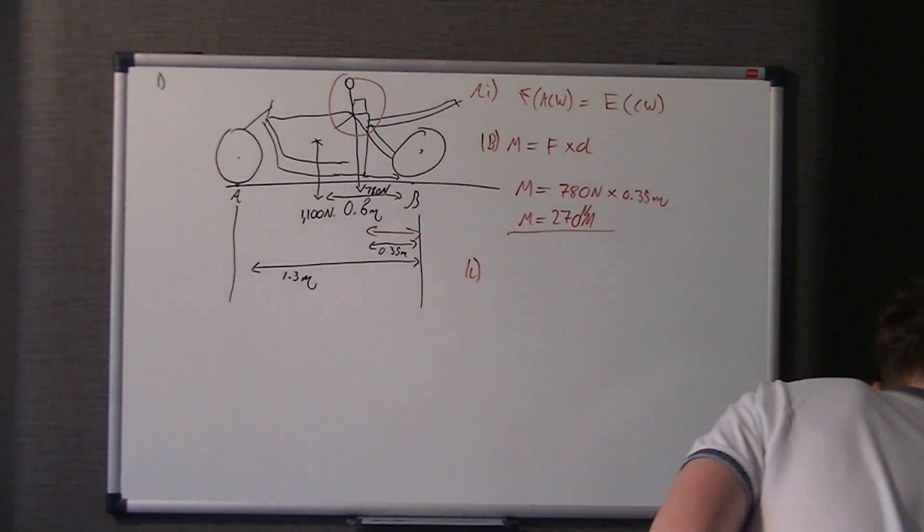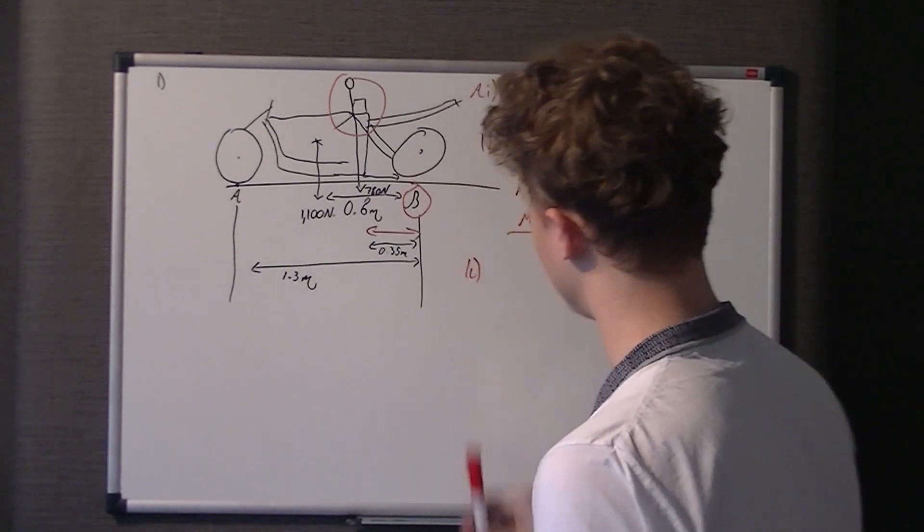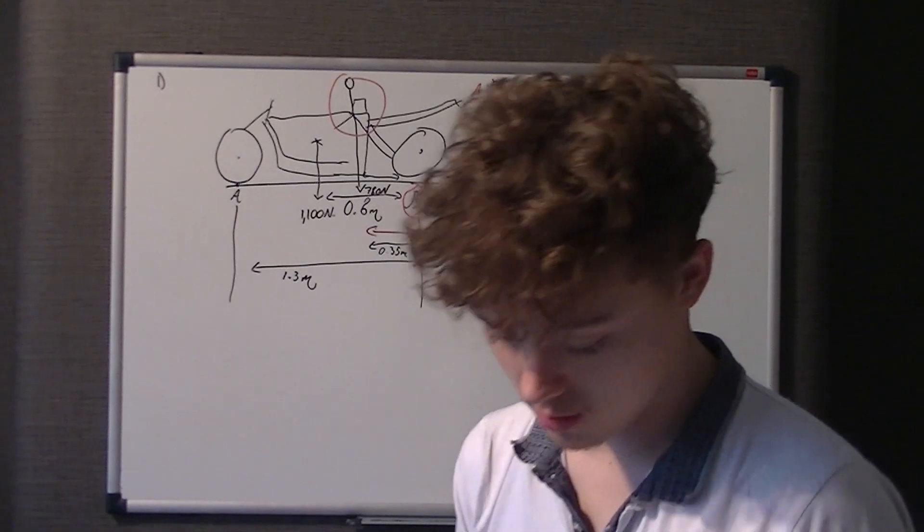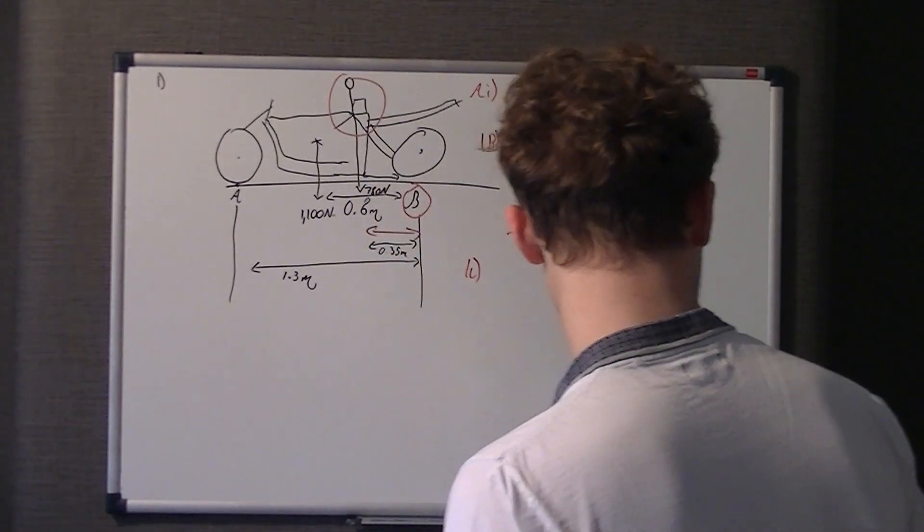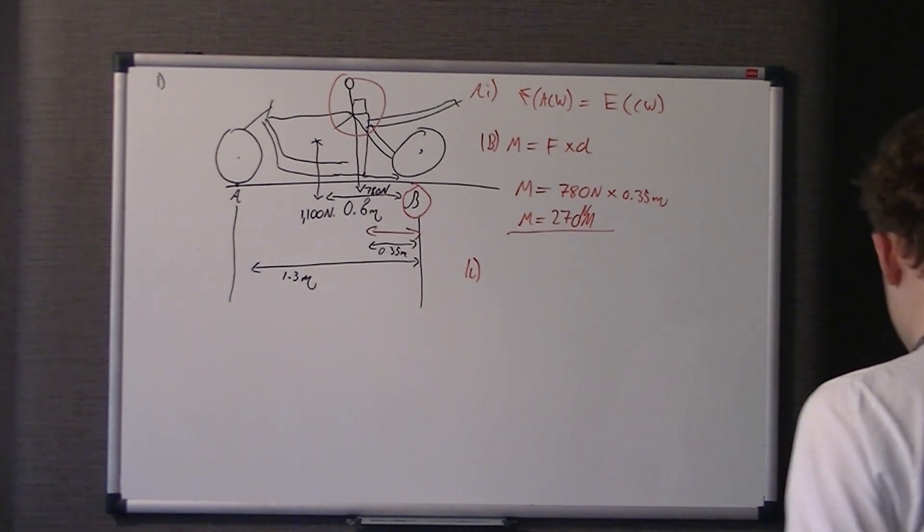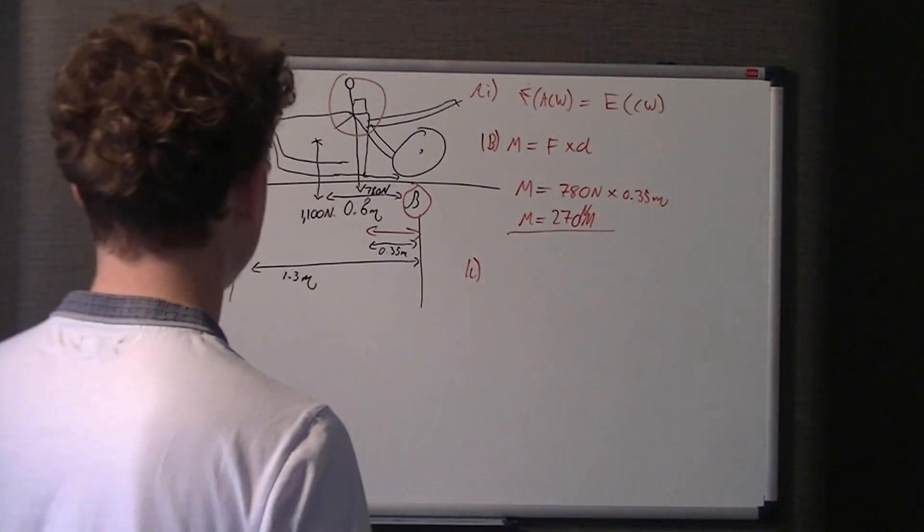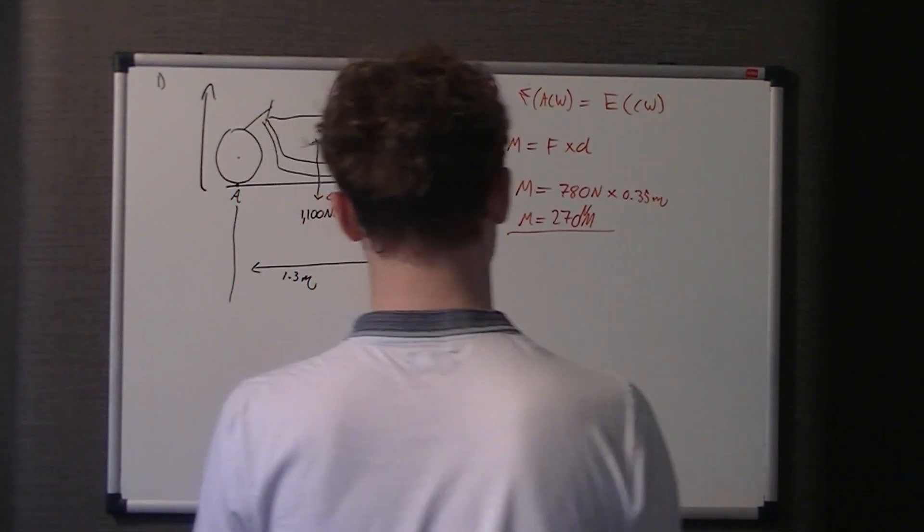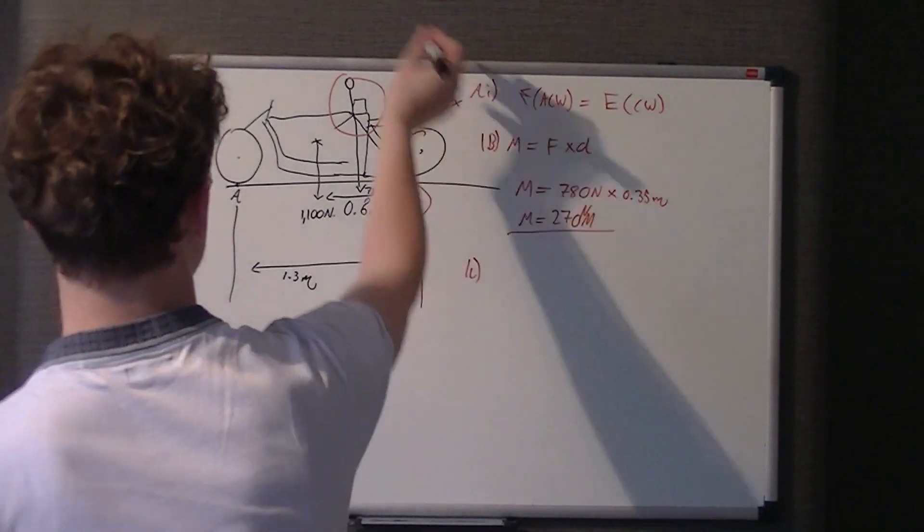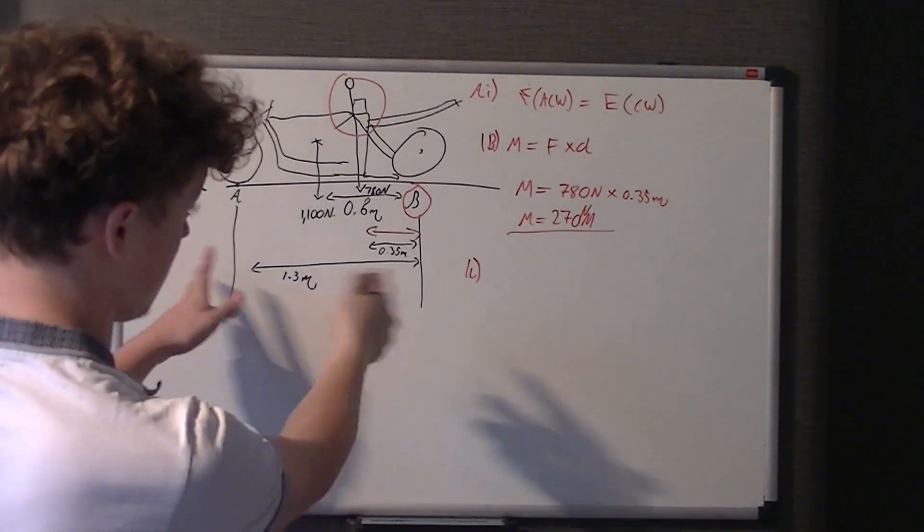On to 1C. So, by taking moments about B, which is this point. I'm doing some different colours. It's getting crazy now, guys. Doing black. So, we're at B. And it says calculate the vertical force on the road that exerts on the tyre at A. So, we need to work out the vertical force at A. Now, what we do for this, we do sum of the clockwise moments.